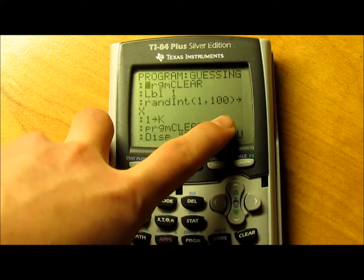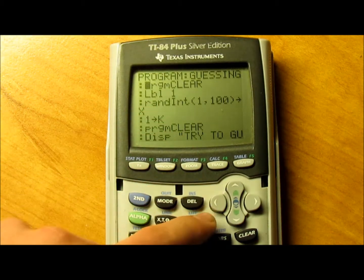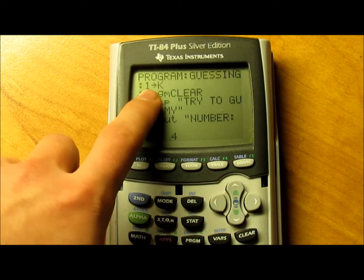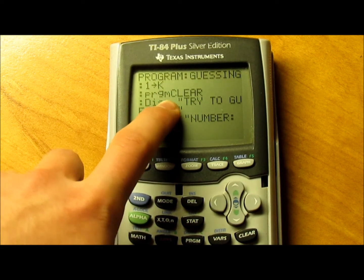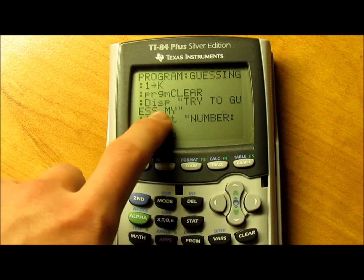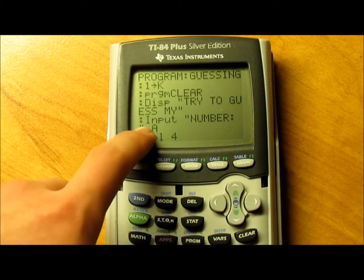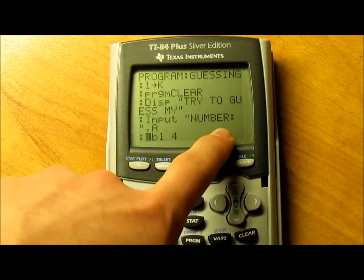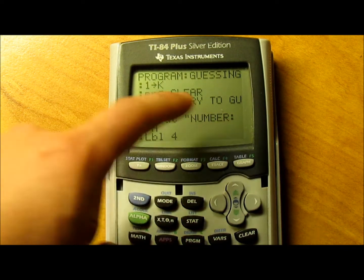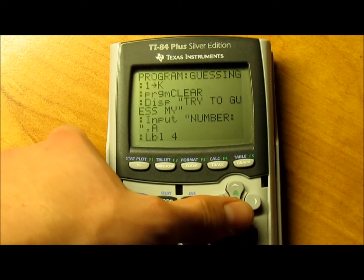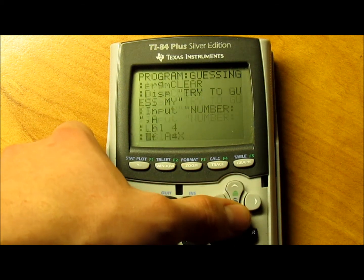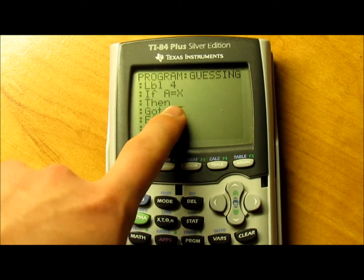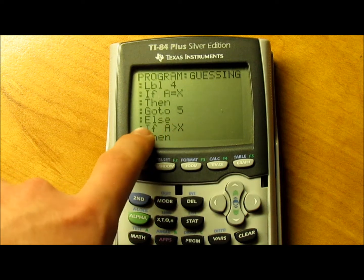Then the store button, which is right above the on button, and X. I chose some random variables here. Then you'll need 1 store K, run program clear again, and display try to guess my number in quotations. Then put input number with or without the colon, comma A. Set a label 4. Then if A equals X, then go to 5, else